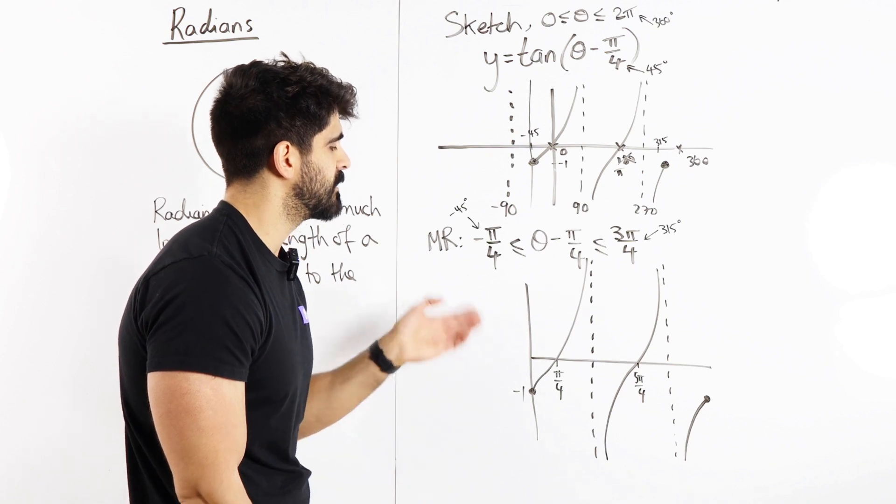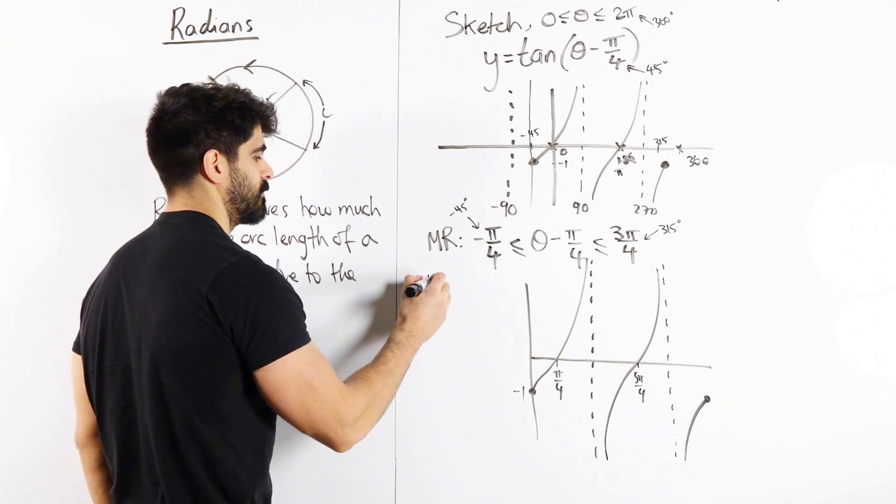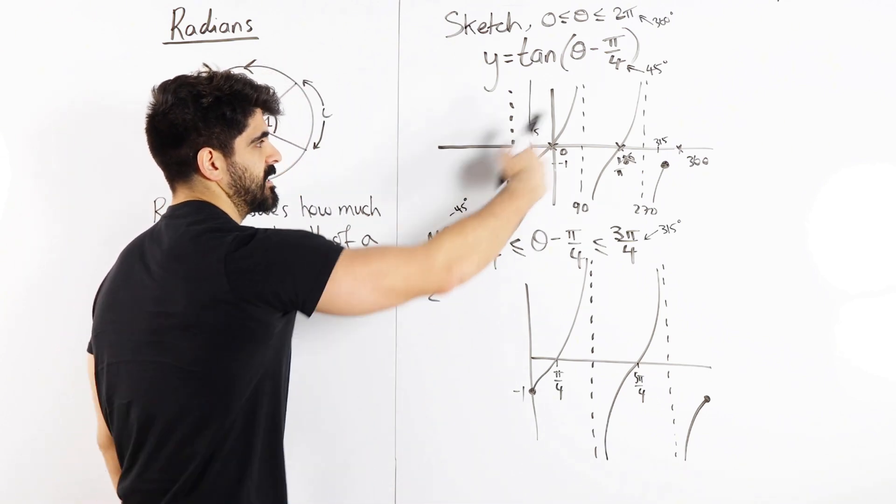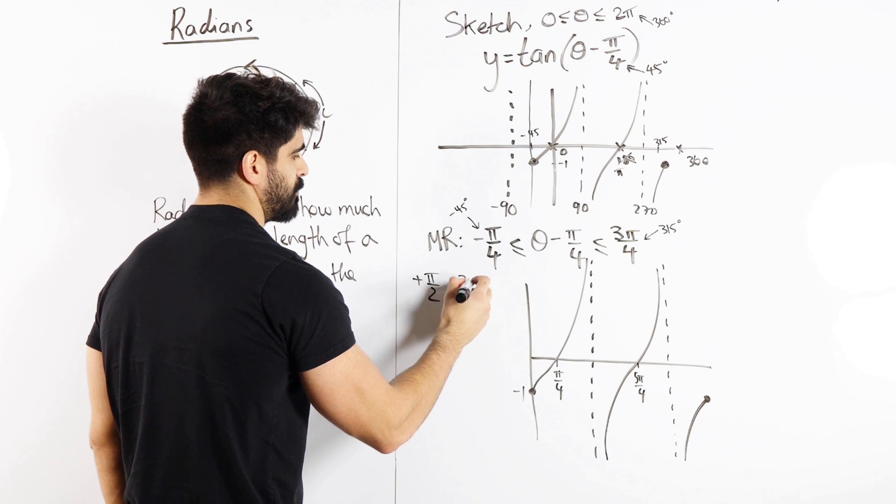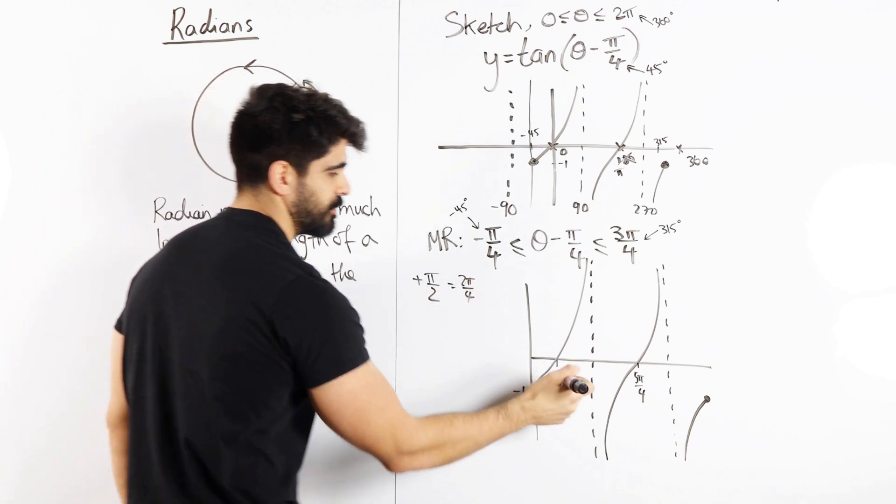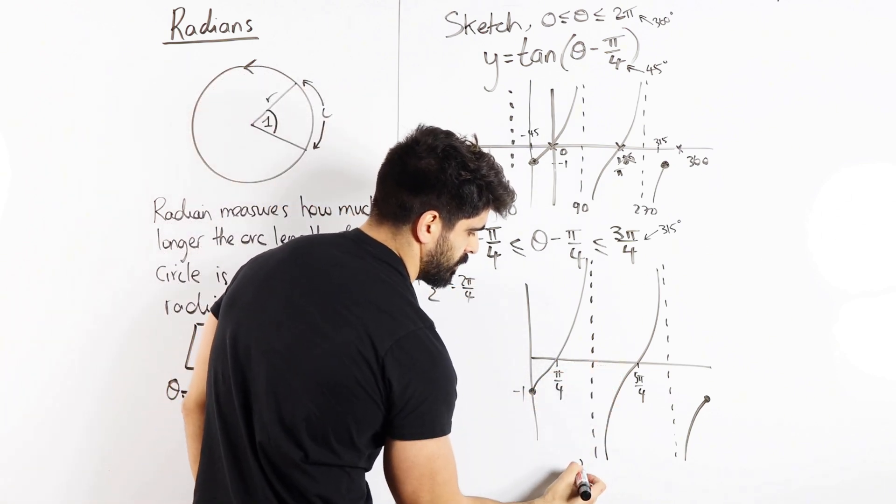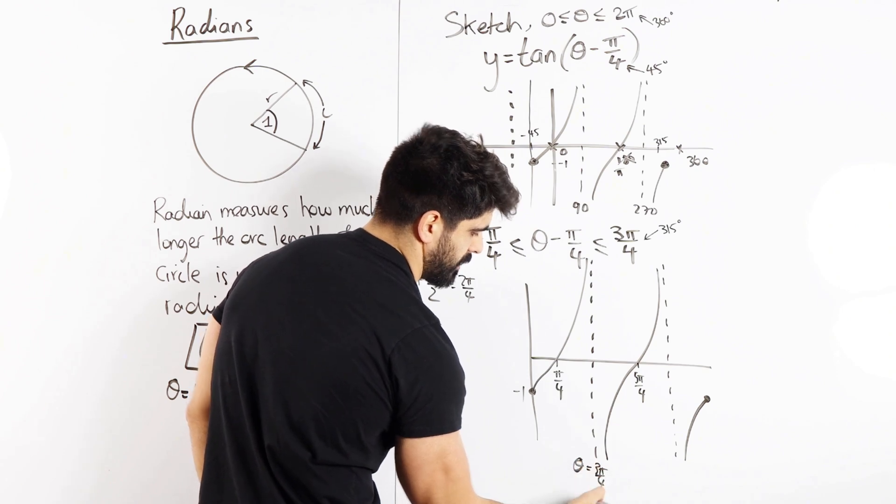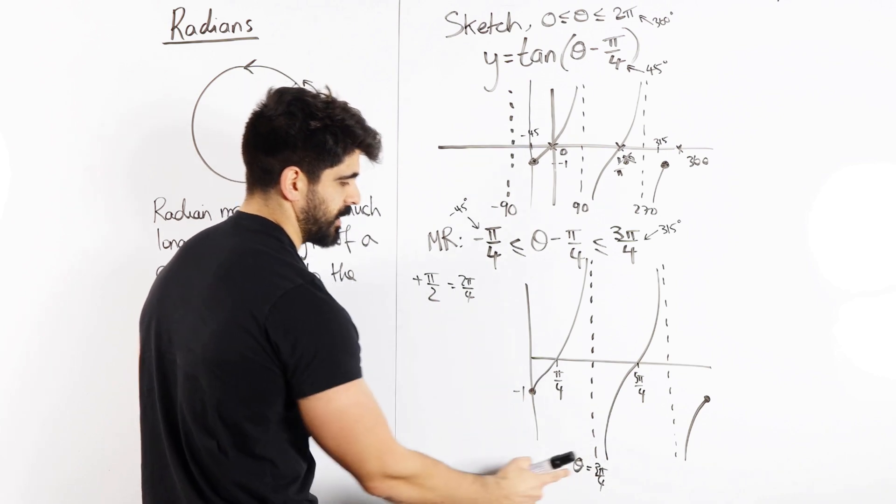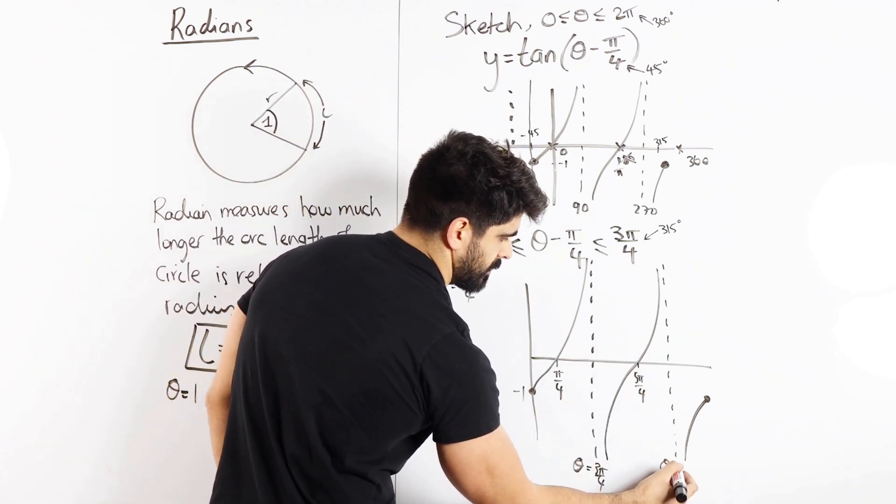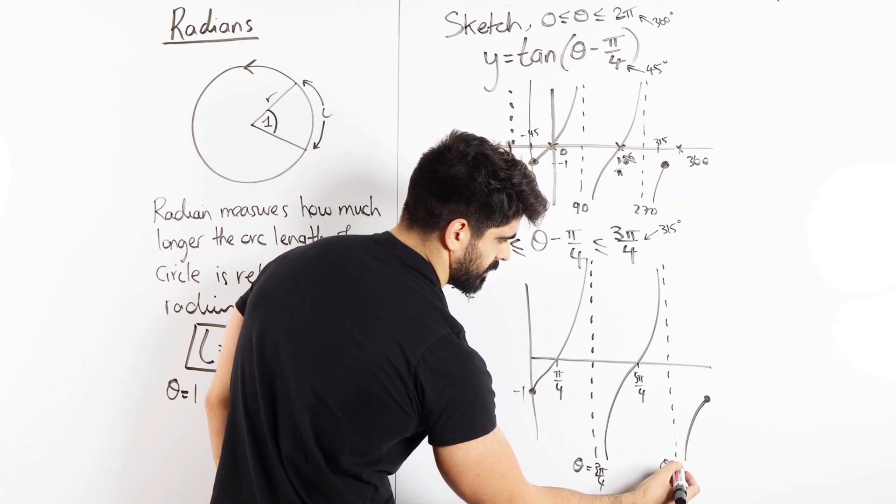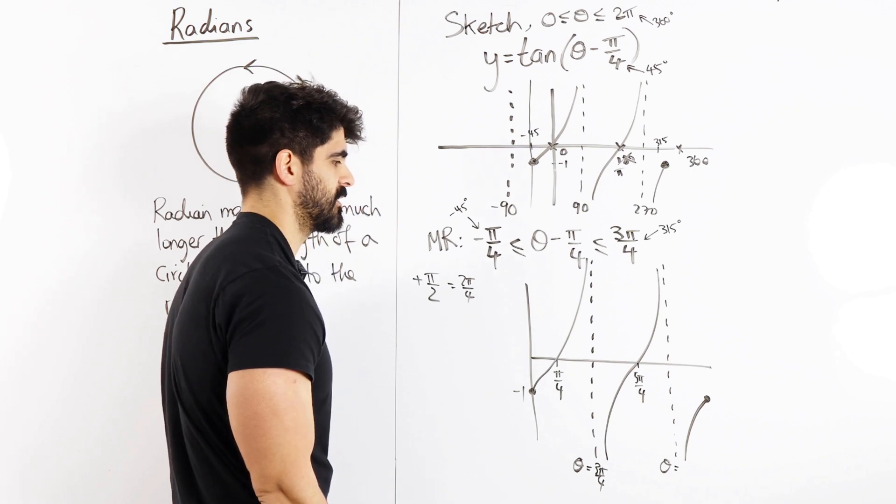You could also think of it as something's happening every 90 degrees. Something happening every 90 degrees means we're adding pi over 2. Now we're adding pi over 2 to get to each important point, which is 2 pi over 4. So I'm just adding 2 pi. So this here would be theta is 3 pi over 4.